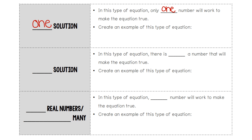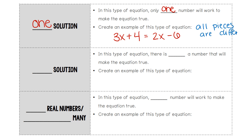An example would be 3x plus 4 equals 2x minus 6. You will notice that all pieces of the equation are different, specifically the x values. 2x and 3x are different, meaning we can solve the equation and we end up with a final answer of x equals negative 10.